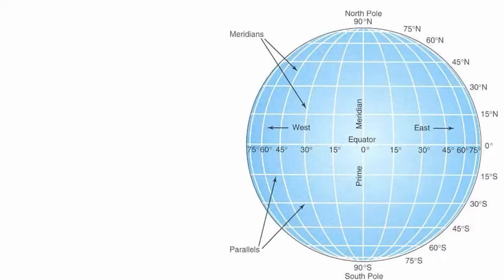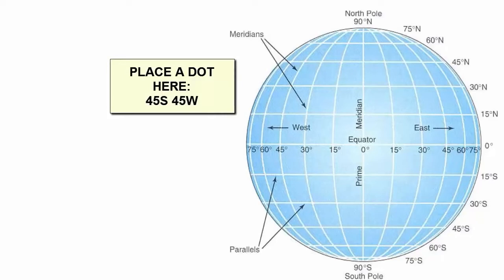Now try to accurately locate or place a dot on the spot that is located 45 degrees south of the equator and 45 degrees west of the prime meridian.